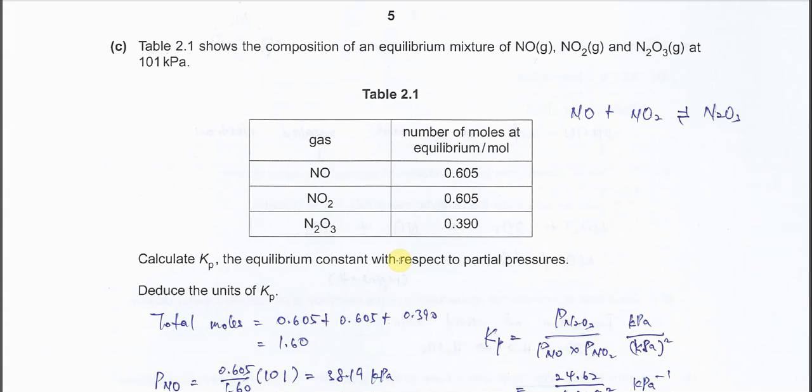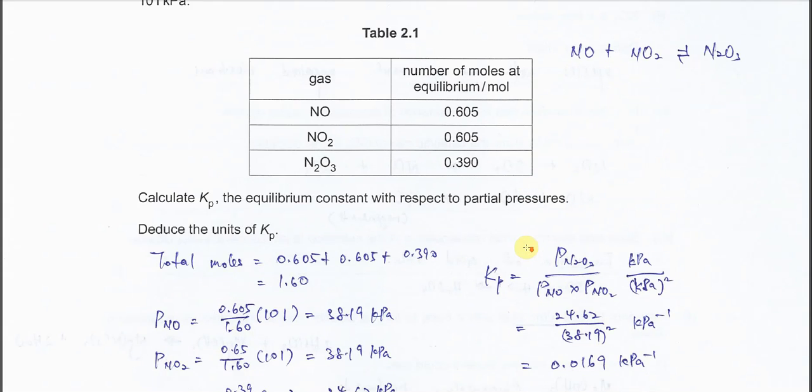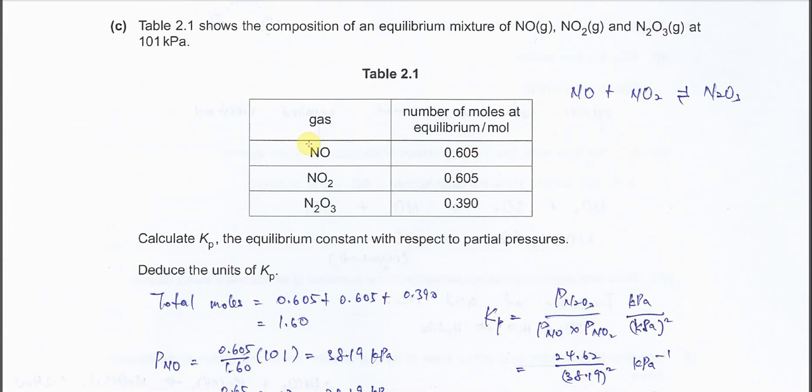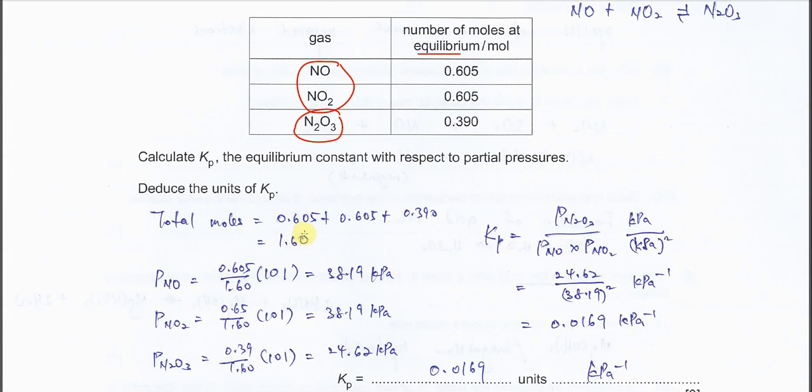Part C. This is the partial pressure calculation. Once you get the partial pressure, you can get Kp. In order to calculate Kp, you need to get partial pressure. First thing you need to do is get the total moles. Already given for NO, NO2, and N2O3 at equilibrium: 0.605 for NO and NO2, 0.390 for N2O3. The first thing is to find total moles. Sum up these three moles, you get 1.6.